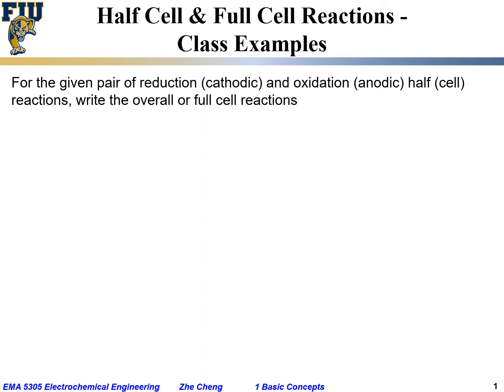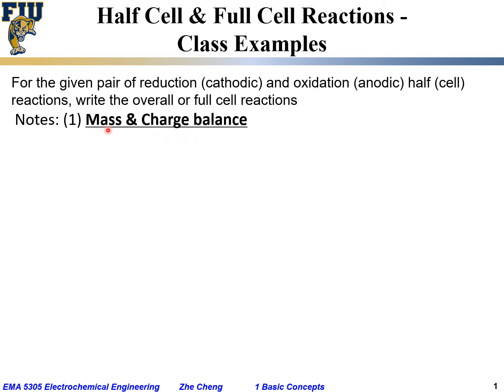Let's take a look at some examples of how to get a full cell reaction if we know the two half-cell reactions — a reduction or cathodic half-cell reaction and an oxidation or anodic half-cell reaction — and how to write the overall full cell reaction. Remember, you have to keep in mind the mass and charge balance: the mass has to be balanced for each half-cell reaction.